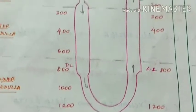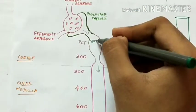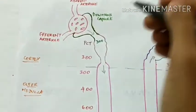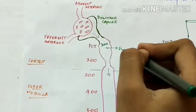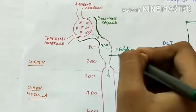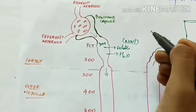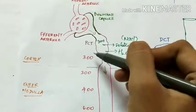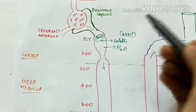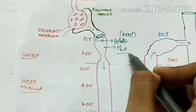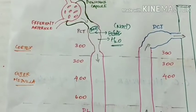When the urine is filtered through the glomerulus, its osmolarity is around 300 milliosmoles. In the proximal convoluted tubule (PCT), there is reabsorption of both solutes and water — mainly sodium and chloride. So the osmolarity is maintained at around 300 milliosmoles, and the glomerular filtrate here is isotonic.